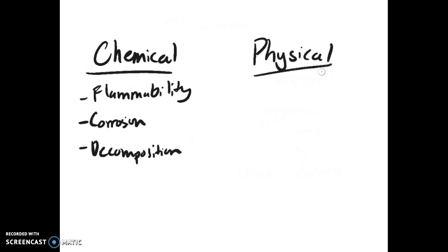A physical property is a property that can be observed without changing the physical identity of the substance. This includes things like density, conductivity, and color or even state of matter.